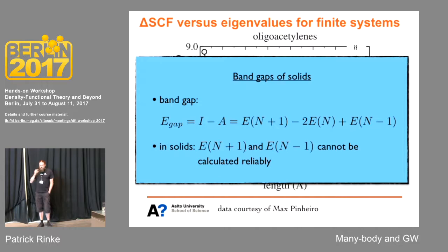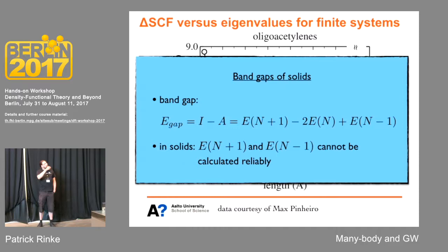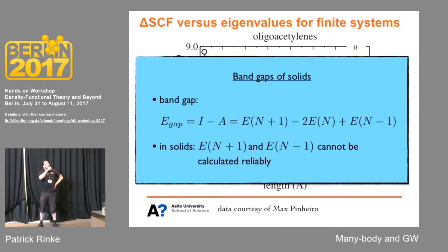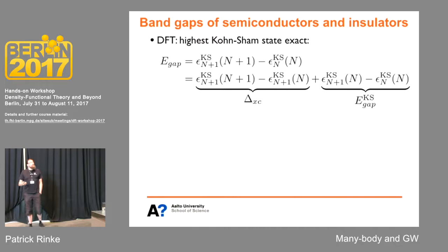The last thing I wanted to do is briefly talk about the band gap problem. For infinitely delocalized states as you would find in a solid, we have a problem. If we wanted to calculate the gap of a solid as a difference of total energies, there are problems related to the homogeneous background you have to introduce when you add an electron, and problems with the delocalization error. So although it looks nice on paper, it doesn't actually work. You have to rely on the Kohn-Sham eigenvalues, and there's a problem with those too.